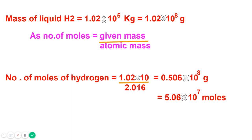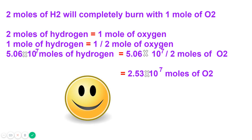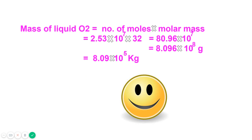For scientific notation, the decimal is moved right and the exponent decreases, so moles of H₂ = 5.0 × 10⁷ moles. Now, 2 moles of hydrogen burn completely with 1 mole of oxygen, so for 1 mole of H₂ it is ½ mole of O₂. For 5.0 × 10⁷ moles of H₂: 5.0 × 10⁷ × (1/2) = 2.5 × 10⁷ moles of oxygen.